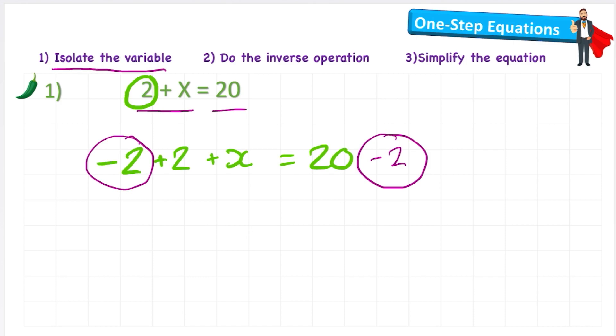Now I can write the next line and it will say negative 2 plus 2. So this part here is actually just going to cancel itself out and become a 0. So we don't need it. I'm just going to put my x. So x equals 20 minus 2. Now I can solve this and say x equals, well 20 minus 2 is 18. So x equals 18.